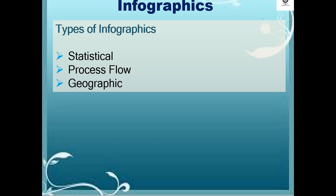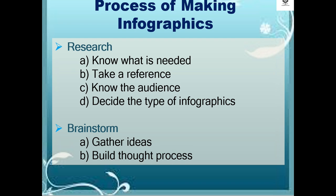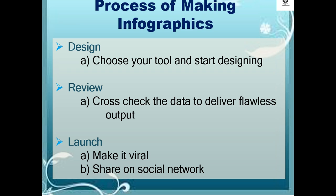There are types of infographics such as statistical, process flow, and geographic. The process of making infographics includes: first, research — know what is needed, take a reference, know the audience, and design the type of infographic. Next is brainstorming, where you gather ideas and build a thought process. Then design, where you choose your tool and start designing. Review, where you cross-check the data to deliver flawless output. Finally, launch — make it viral and share on social networks.